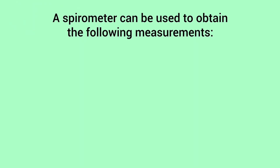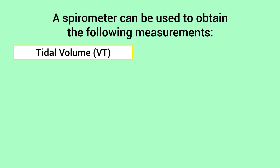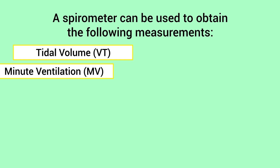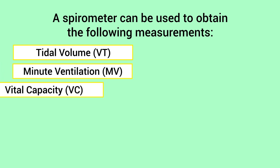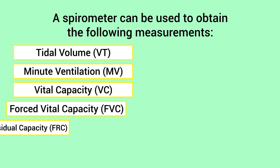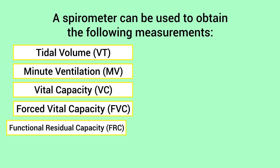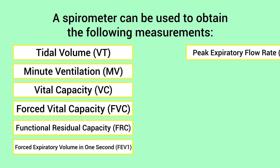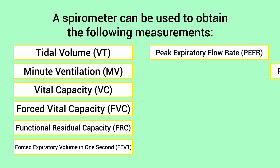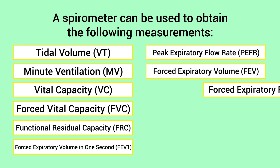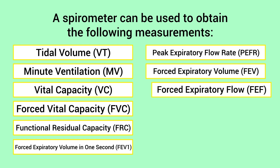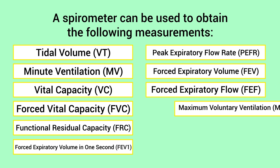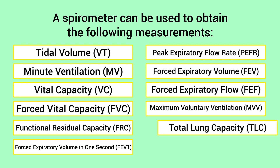A spirometer can be used to obtain the following measurements: tidal volume, minute ventilation, vital capacity, forced vital capacity, functional residual capacity, FEV1, peak expiratory flow rate, forced expiratory volume, forced expiratory flow, maximum voluntary ventilation, and total lung capacity.